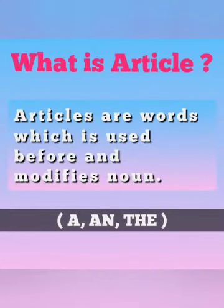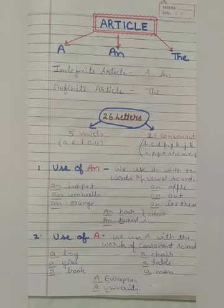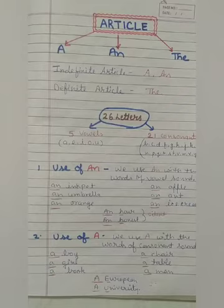What is an article? Articles are words used before and modify a noun. Article is what words hote hai, jis se hum noun ke pahle modifies karne ke liye use karte hai. A and AN are the indefinite articles, and THE is the definite article.